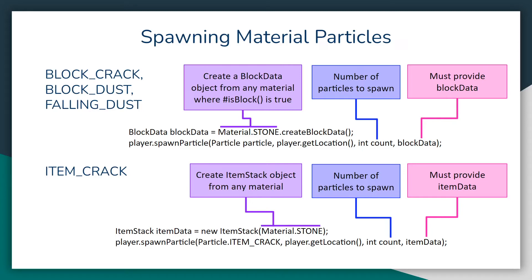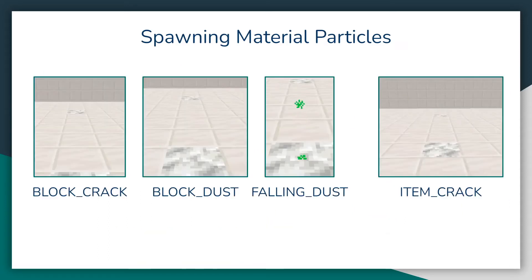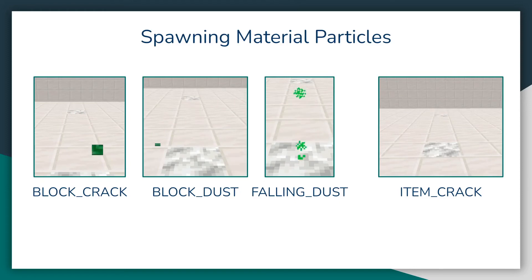With item crack, you don't have to have a solid block — you can use any material. You create an ItemStack, set it to a new ItemStack with whatever material you want, and insert that into the very end of the spawn particle method call as a parameter. Block crack, block dust, and falling dust all use the emerald block material in the example, and item crack uses the emerald material — so you can see the differences between all of the particles.